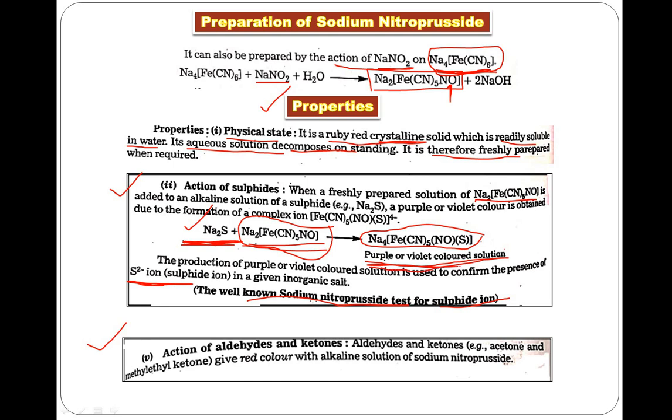The second important property is detection of aldehydes and ketones. When aldehydes or ketones are treated with sodium nitroprusside under alkaline conditions, they give a red colored solution. The red color indicates that your solution contains aldehyde or ketone.